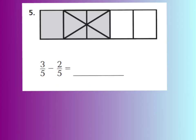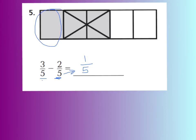Here's number 5. I want you to use the model and the equation to figure out the answer. Press play when you're ready to go over it. The model shows 5 equal pieces, and 3 of them were shaded — so 3 fifths. Then we took away 2 of those shaded pieces, so I have 3 fifths minus 2 fifths. Since I have like denominators, I subtract the numerators: 3 minus 2 equals 1, and I keep the denominator the same — 1 fifth. That's what my model is showing me: 1 fifth left over.